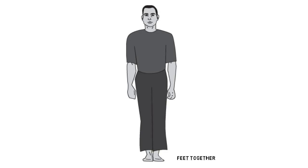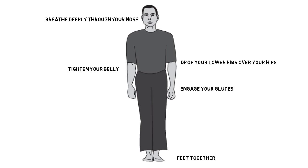Stand with your feet together. Engage your glutes, the muscles in your butt. Drop your lower ribs, so that they are over your hips, and tighten your belly. Breathe deeply through your nose, allowing your belly to expand gently on the inhalation and tighten on the exhalation. Slightly bend your knees, so that they are not locked. Look outward with a wide, level, and diffuse gaze that engages your peripheral vision.